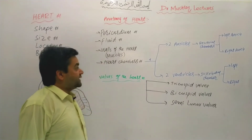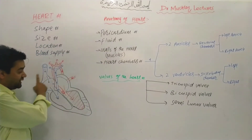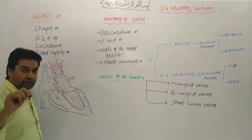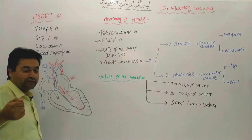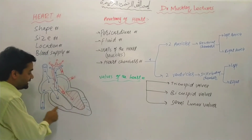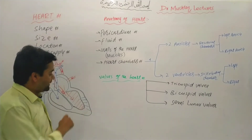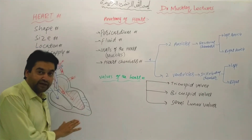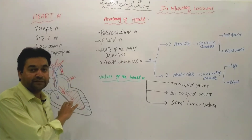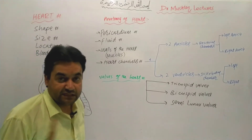The heart wall is a muscle wall. The wall of the heart is made of muscle. The heart wall consists of three layers: Epicardium, Myocardium, and Endocardium.